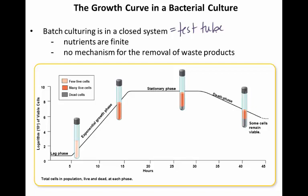The first is the lag phase — this is a preparatory phase. Think in terms of time zero: these are new cells, you just took a loop and put them into the test tube, and they're not going to start growing yet. This is a phase of acclimation — they're getting acclimated to the environment, sort of testing the waters. Eventually, once the cells are acclimated, they will begin to grow exponentially: that doubling time will kick in and they will start reproducing at a relatively rapid rate.